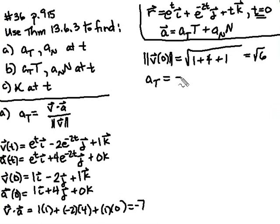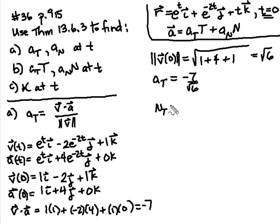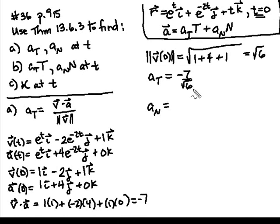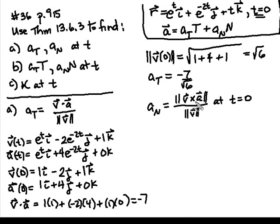Now we're going to find A sub N, the normal scalar component of acceleration, which equals the norm of V cross A divided by the norm of V. We're only interested in this at T equals zero, so I can use those particular vector values. The cross product V cross A at zero uses the determinant with rows i, j, k; then 1, negative 2, 1; then 1, 4, 0. That gives us negative 4i, plus 1j, plus 6k.